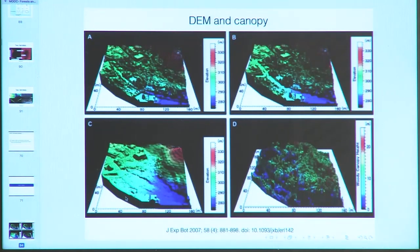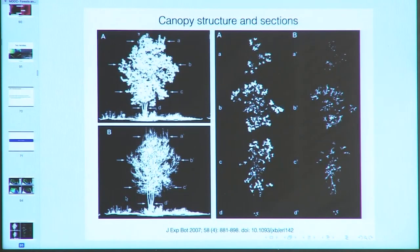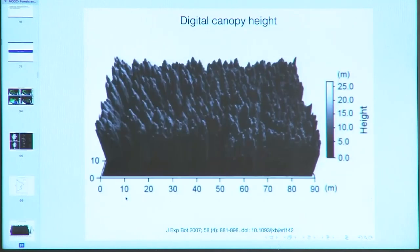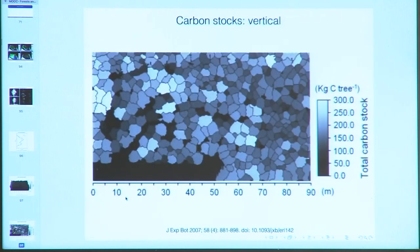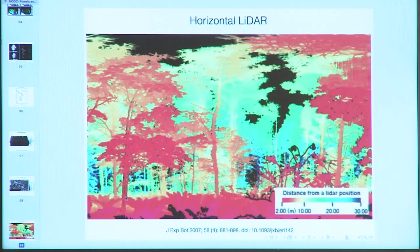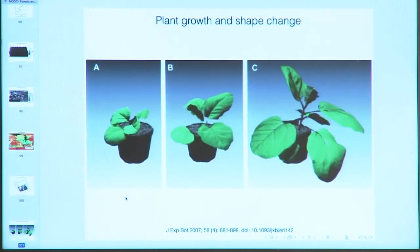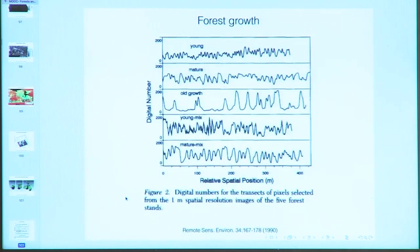In forestry, LIDAR can be used to obtain DEM, canopy structure, cross-sections of a tree, leaf area density, and digital canopy height. You can measure carbon stocks using horizontal LIDAR, study plant growth and shape change, and understand stand composition — whether you have young crops, mature crops, old crops, or a mix — in a very efficient and economical way.